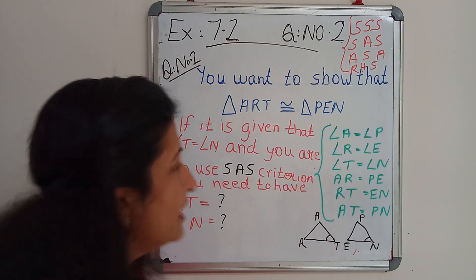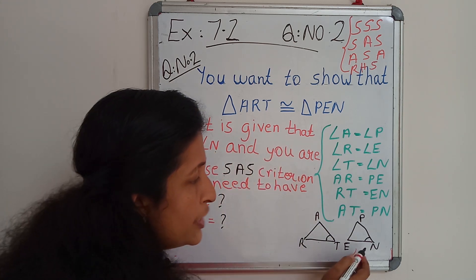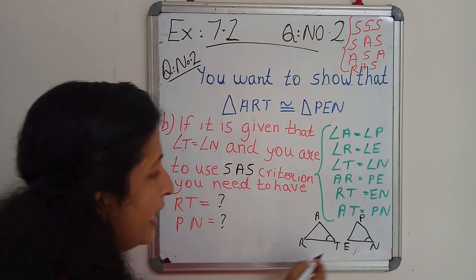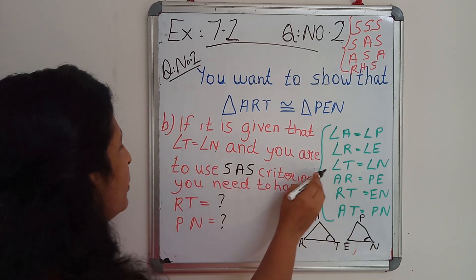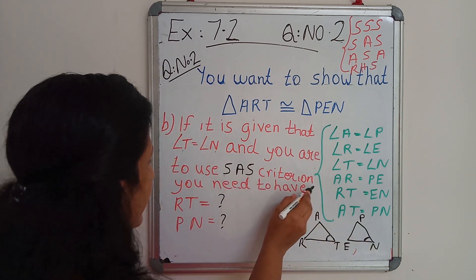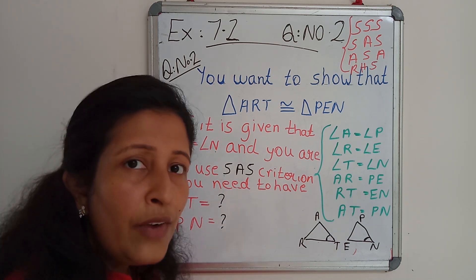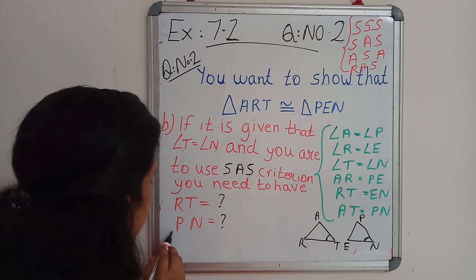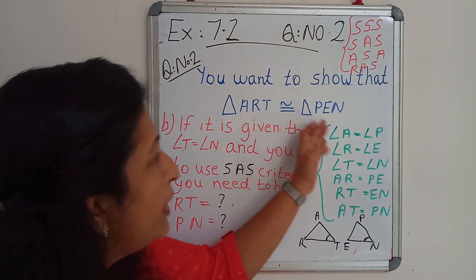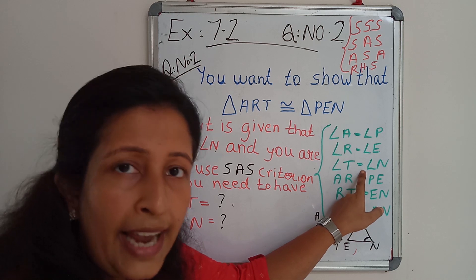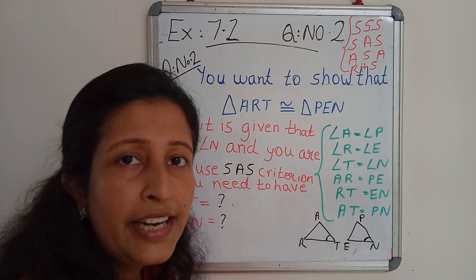Question number B says that if it is given that angle T equal to angle N — these are the 2 given triangles and angle T is equal to angle N — and you have to use the SAS criterion, you need to have 2 more things. We know these 3 are the corresponding angles and they are equal, and these 3 are the corresponding sides and they are equal.